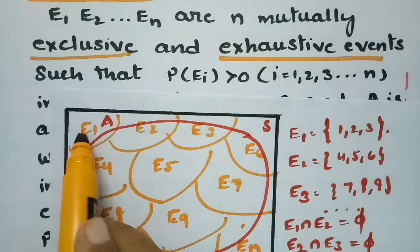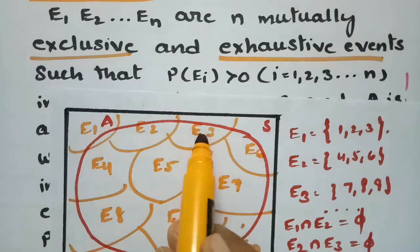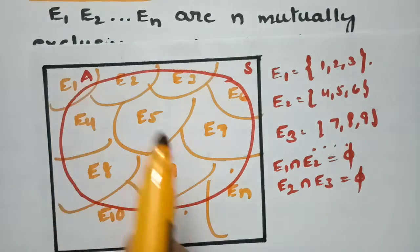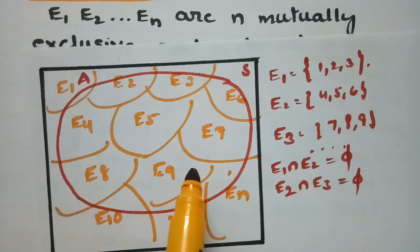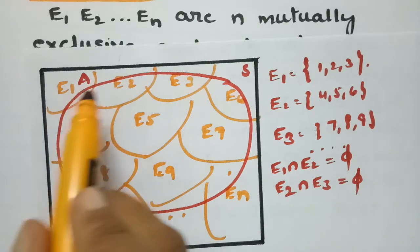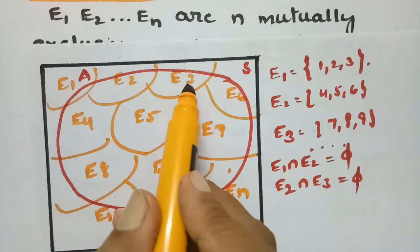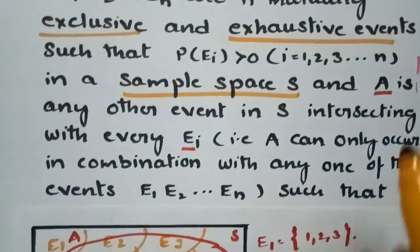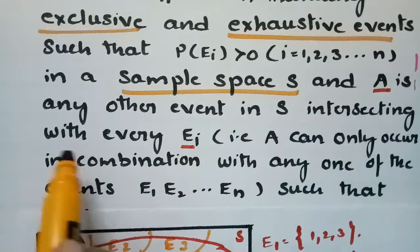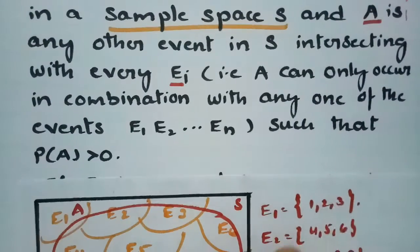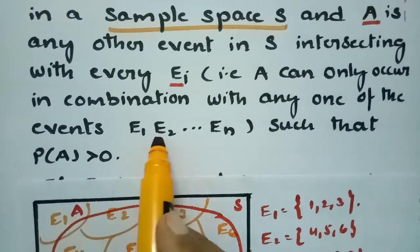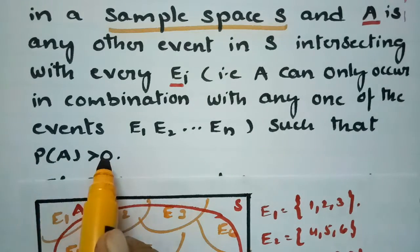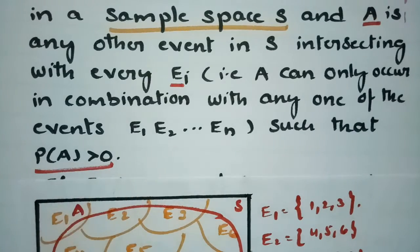A is intersecting with E1, A is intersecting with E2, and A is intersecting with E3, E4, E5, E6 and so on — each and every event A is an intersecting set. Whereas E1 and E2 are disjoint, E2 and E3 are disjoint. But with A, each and every event is intersecting. A can only occur in the combination of any one of the events E1, E2, E3 and so on, and the probability of A is also positive.